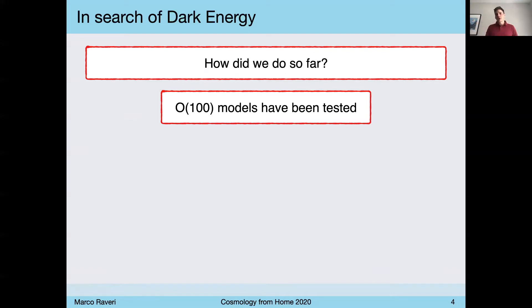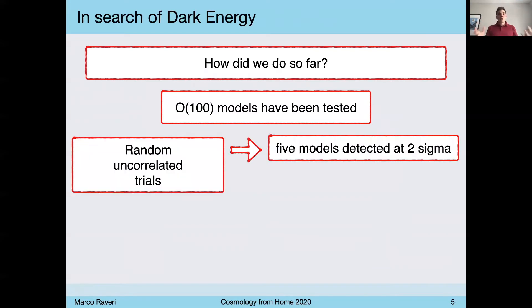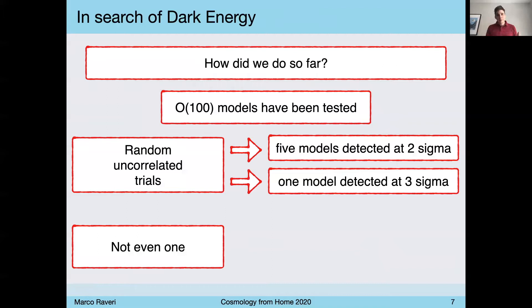And if we had 100 models, and these were all random uncorrelated trials, then that would mean that we should have at least five models that are detected at two sigma. And if we are a little bit lucky, perhaps we would have one model that's detected at three sigma. The harsh reality is that we have none, that we have no model that stands at these statistical significance, once faced with the full set of cosmological observations we have so far.